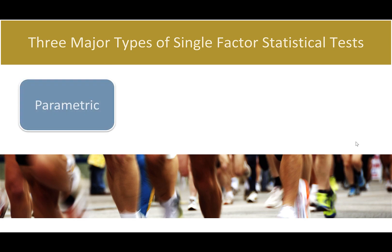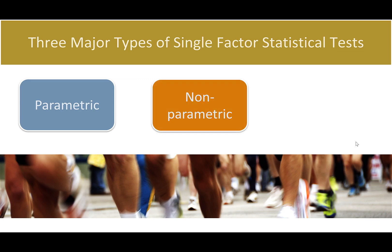So we've talked about three major types of single-factor statistical tests: parametric — ANOVA, t-test, paired t-test; non-parametric — Kruskal-Wallis, Mann-Whitney, Wilcoxon; and frequency tests — things where you're counting up categories — which are test of proportions and chi-square.